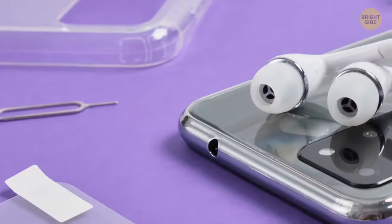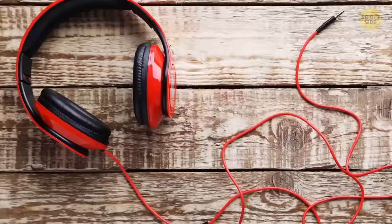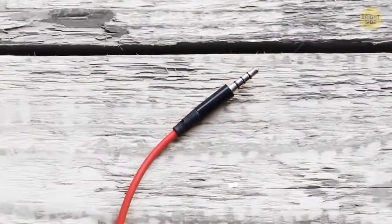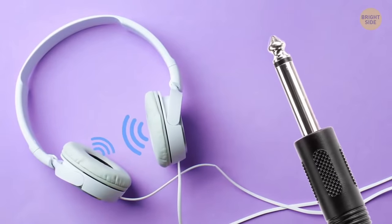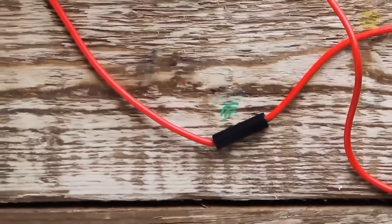Headphone jacks might become a thing of the past because of wireless technology, but if you've seen one, you might have noticed the rings at the base of the plug. One ring means single-sound playback. Two rings represent stereo sound in the left and right ear, while three rings means you've got stereo and a microphone built in.